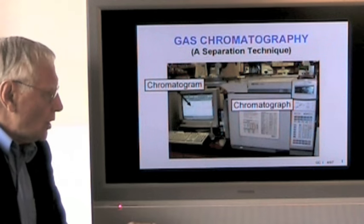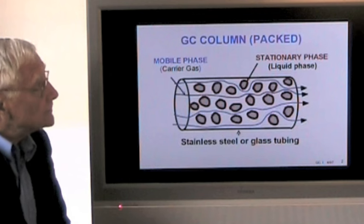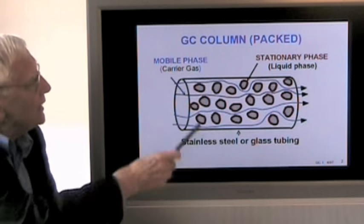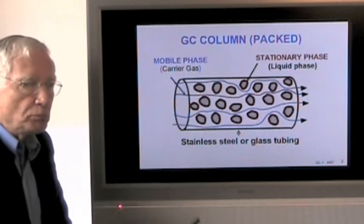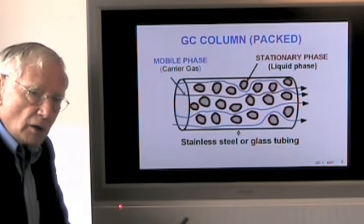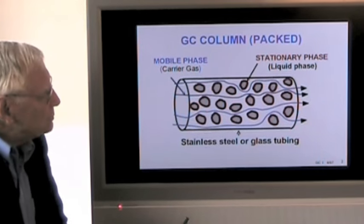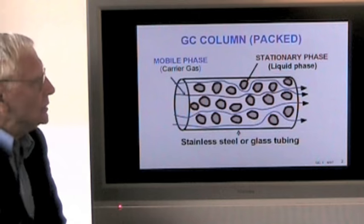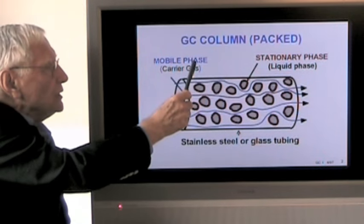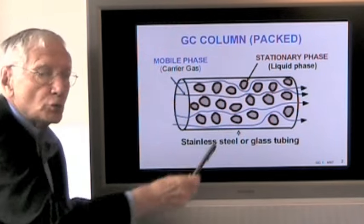How does this column and system separate things? This shows us a schematic of a GC packed column. There are two columns, packed columns and capillary. In this packed column, we have two phases, a mobile phase, which is moving, a stationary phase, which is not moving.